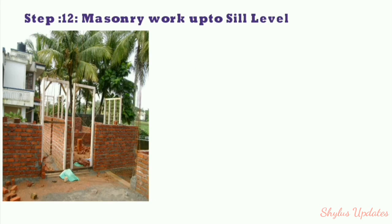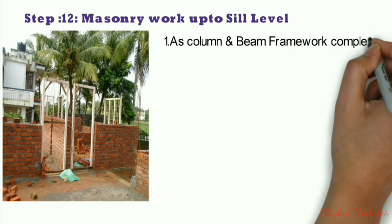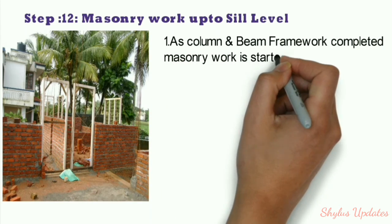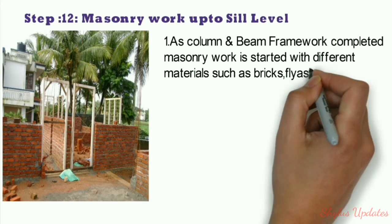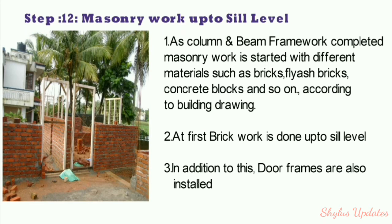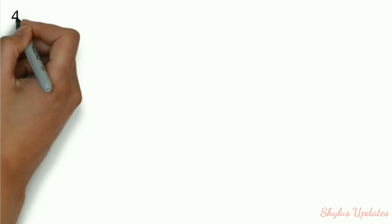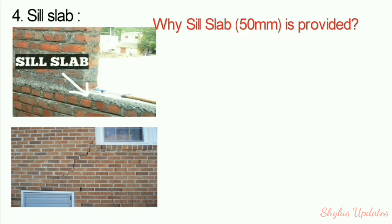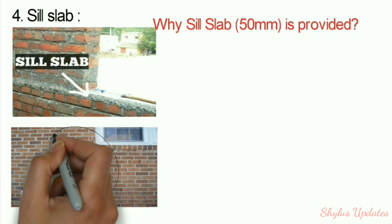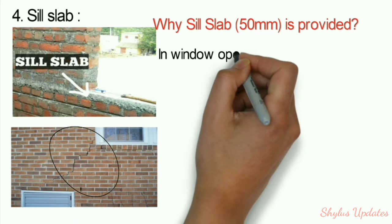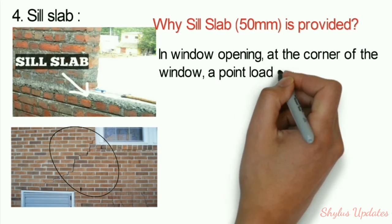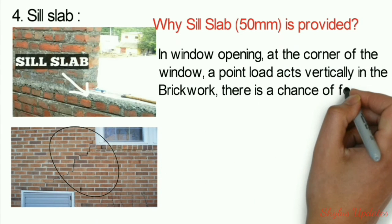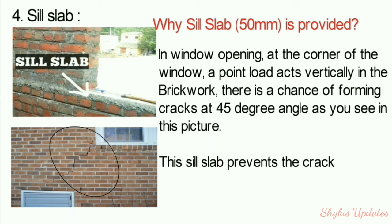Step 12: Masonry work up to sill level. As column and beam framework is completed, masonry work is started with different materials such as bricks, fly ash bricks, concrete blocks, and so on. Brickwork is done up to sill level, and door frames are also installed. A sill slab is provided at window openings because a point load acts vertically at the corner of the window in brickwork, potentially causing cracks at a 45-degree angle. The sill slab prevents these cracks.